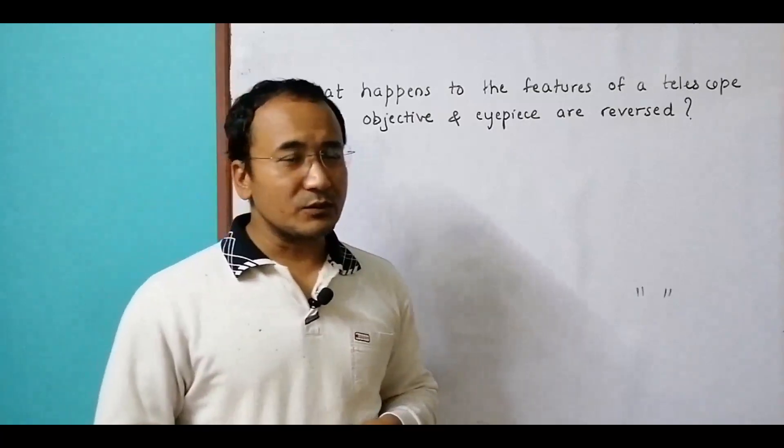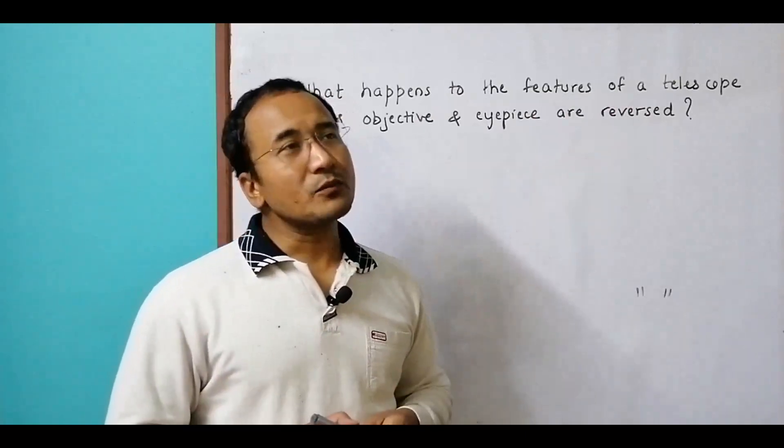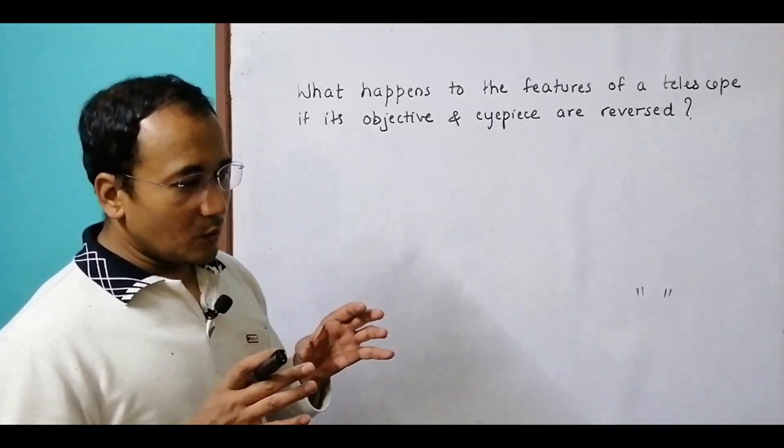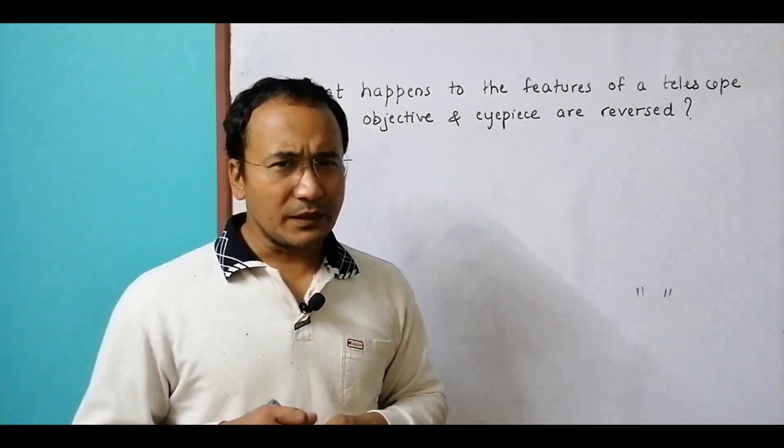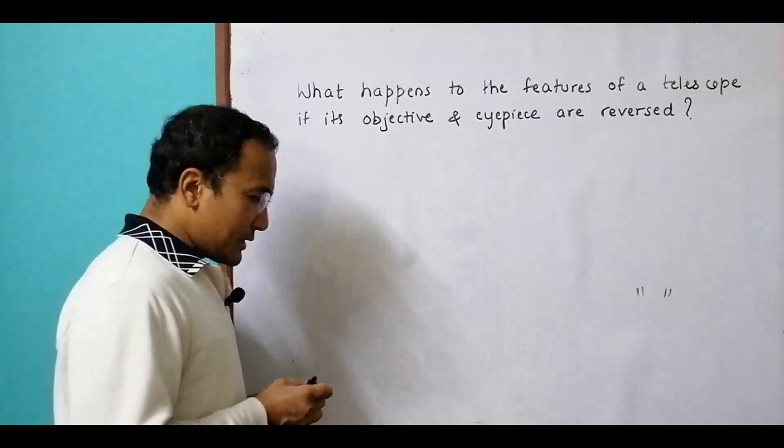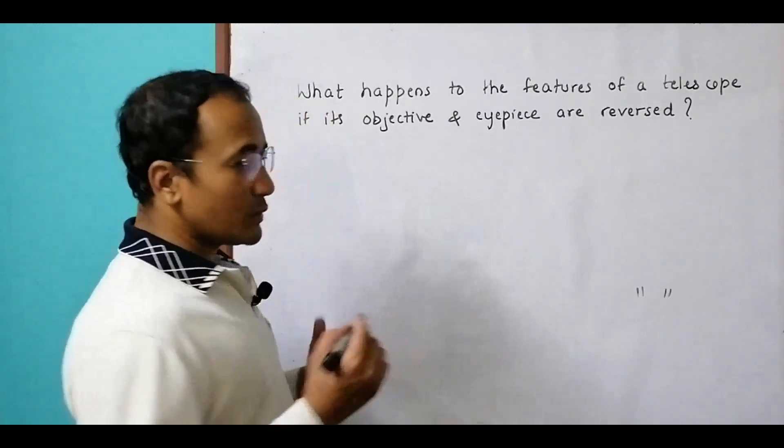One is the objective which turns towards the object and one is the eyepiece which is towards the eye. Whether the final image is formed at infinity or at the near point, the basic setup is the same.